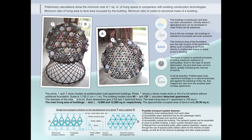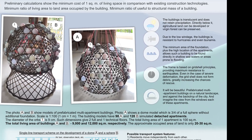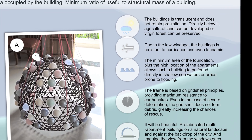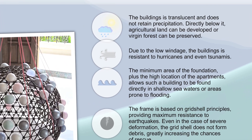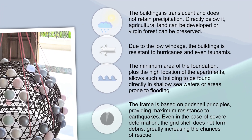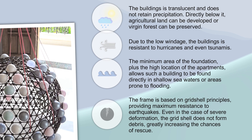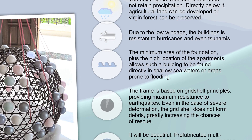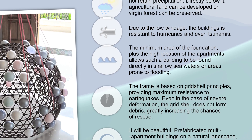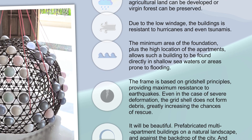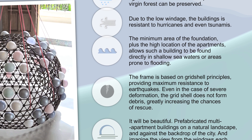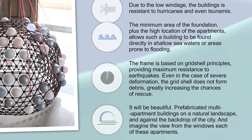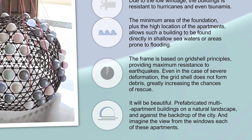The grid shell, as a building structure, has excellent load-bearing capacity and structural toughness. In the case of very devastating earthquakes, ruptures of the shell and significant deformations are possible, but without the formation of rubble, they will not be fatal to people.